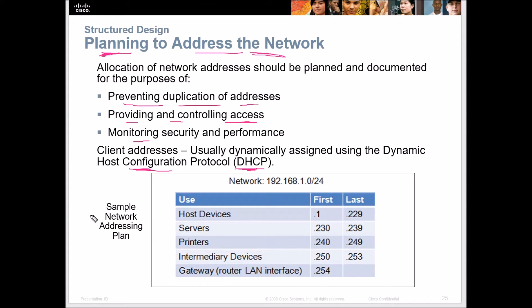Here is a sample network address plan. We need host devices from .1 to .229. We reserve at least 10 IP addresses for servers from .230 to .239, printers from .240 to .249, intermediate devices like routers from .250 to .253, and then our gateway LAN interface at .254.